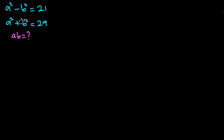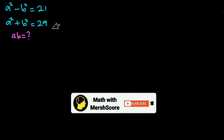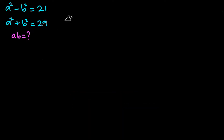Hello everyone. In this video we have been given a system of equations: a squared minus b squared is equal to 21, and a squared plus b squared is equal to 29. We have to find the value of a times b. Before we begin, if you are new here please consider subscribing and also liking this video. Now let's get started.